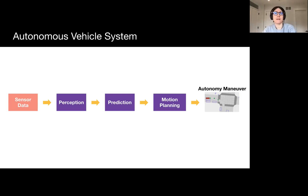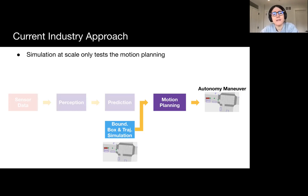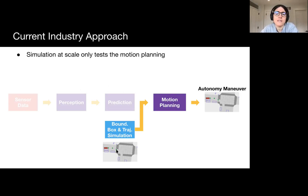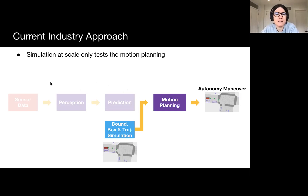You've probably heard many companies talk about driving millions or billions of miles in simulation. What they really mean is the following: they start with a representation of the scene using bounding boxes and trajectories, and they're only testing the motion planning module. This has two problems: one, you're not really testing the full software stack, so you can't use this alone to certify your system. On top of this, the input to motion planning is based on nearly optimal trajectories with very simplistic noise added. So even for the motion planning module you're trying to test, you're not really fully testing it because you don't have the characteristics of everything that can go wrong in your real perception and prediction system.